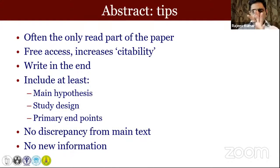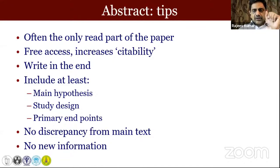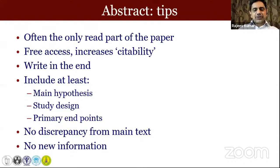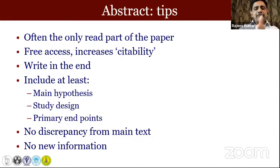For the abstract, always write it at the end. When you have six authors all contributing, write your paper, send it by email to everybody, let everybody give their inputs, keep modifying it in track changes. Once it's ready for final submission, write the abstract last — otherwise you may make a modification in your paper and fail to carry it out in your abstract, creating a discrepancy. You must include at least the most important aspects — the primary endpoint and your results. Don't give any information in the abstract that's not also given in your text; there should be no new information in the abstract.